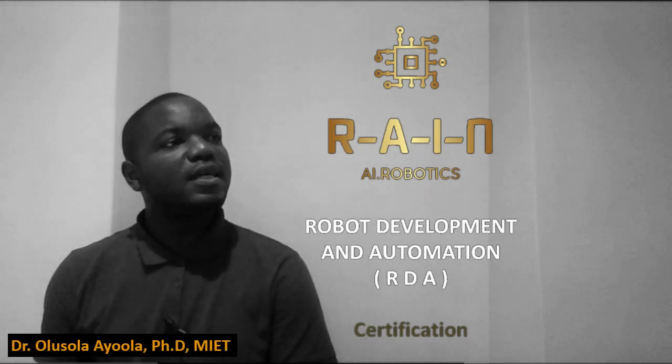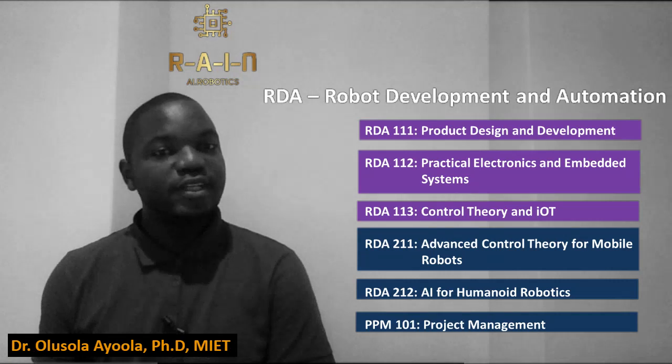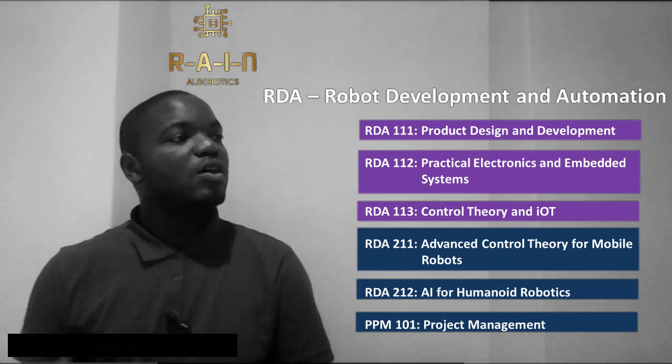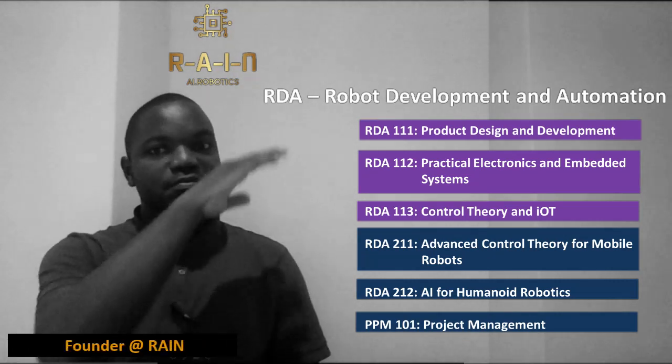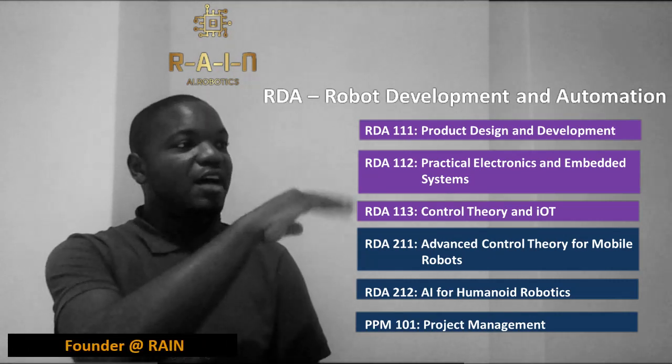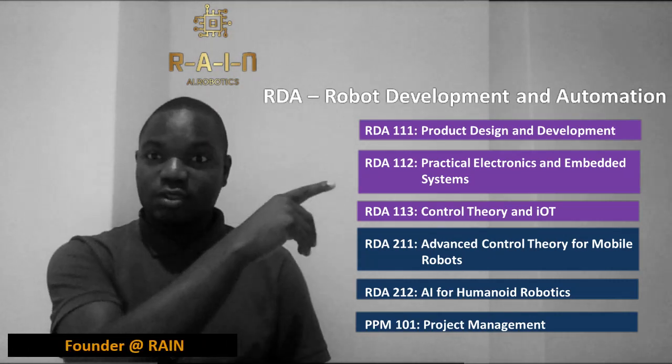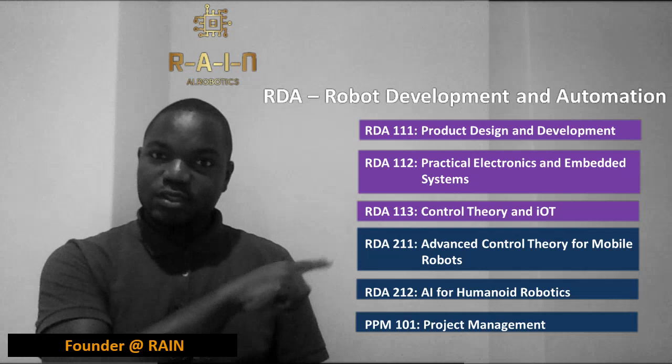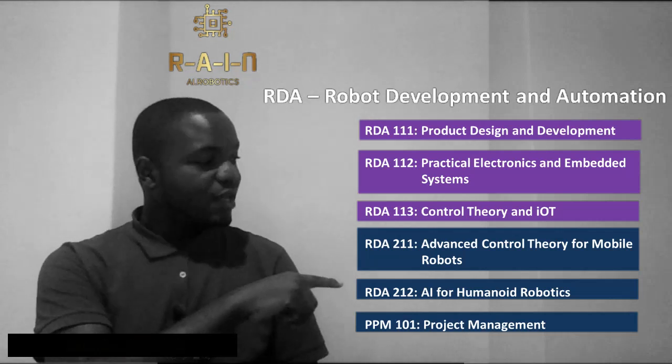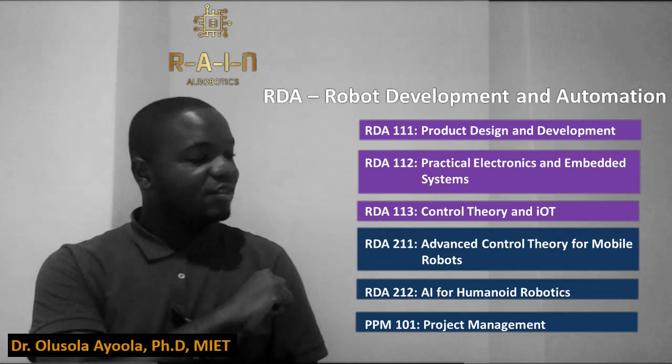The topics to be covered are now being displayed on your screen. The courses in purple are the first semester courses while the ones in blue are the second semester courses.